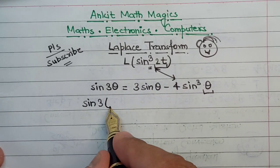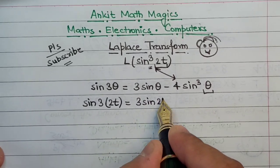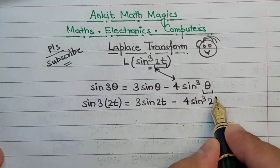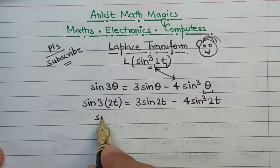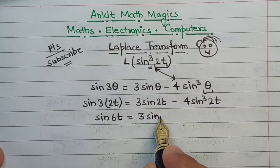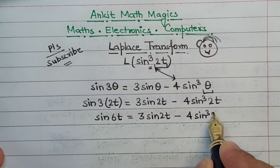This becomes sine 3 times 2t equals 3 sine 2t minus 4 sine cube 2t. That means this will be sine of 6t, this will be 3 sine 2t, and minus 4 sine cube 2t.